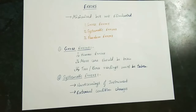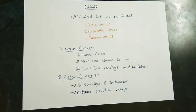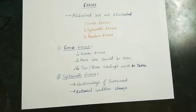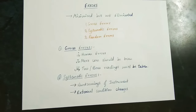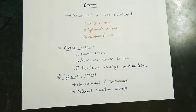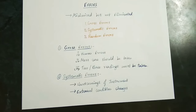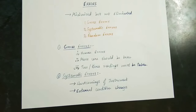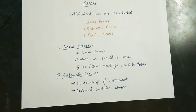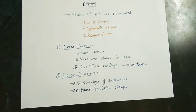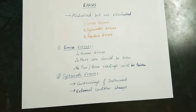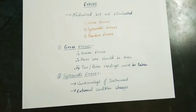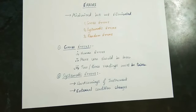Gross Error is also called Human Error. We are going to look at a measurement system — we are going to measure using a sensor and transducer. Gross Error is a human error.